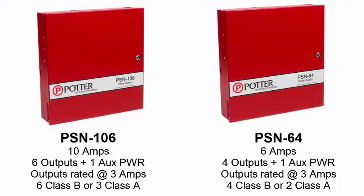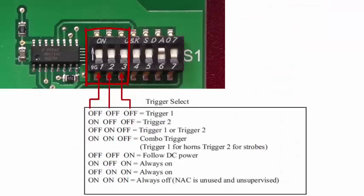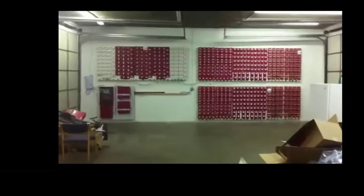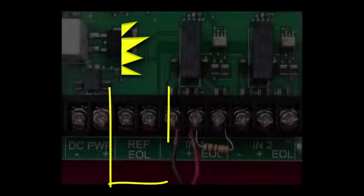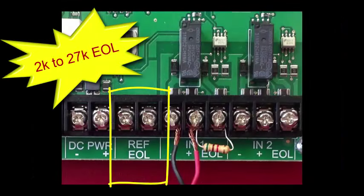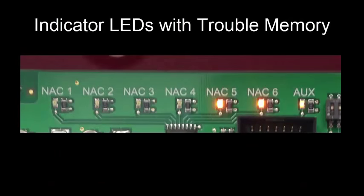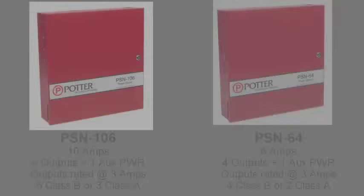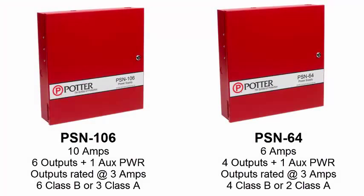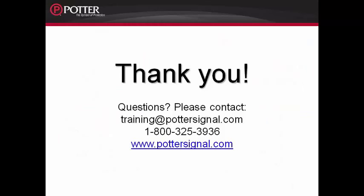To recap, the PSN power supply comes in two sizes, a 10 amp with 6 notification circuits and a 6 amp with 4 notification circuits. The notification circuits are programmed via DIP switches and can be programmed for quadrasync if needed. There is a reference end of the line which can save considerable time when replacing an existing power supply. There is also a trouble memory LED for each NAC output that can also save time in troubleshooting the power supply. This feature rich power supply provides plenty of versatility to save you time and money on your next installation. For more information, please visit our website www.pottersignal.com Thank you.